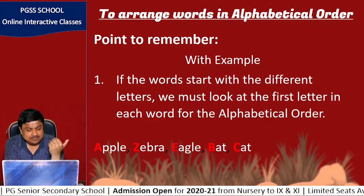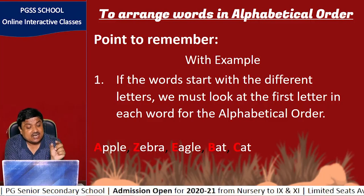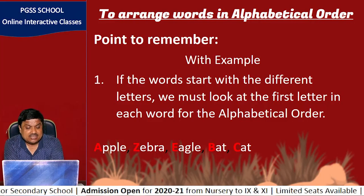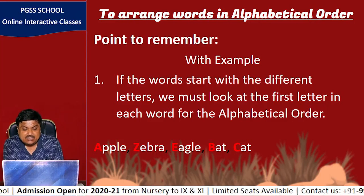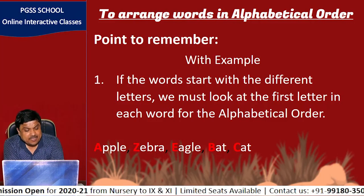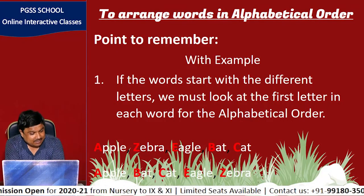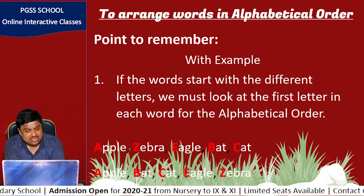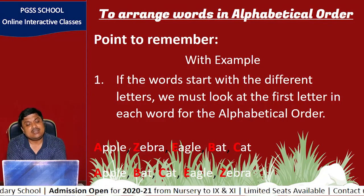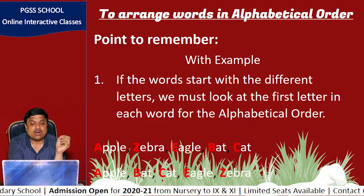Here some words have been given and all words have started with different letters. The words are: apple, zebra, eagle, bat, cat. Written in proper alphabetical order: first apple, then bat, then cat, then eagle, then zebra.